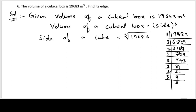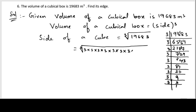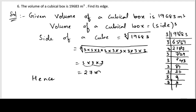We got nine threes in total. Grouping them in sets of three: 3 times 3 times 3 equals 27, three times over. So the cube root of 19683 is 27. Hence the edge — which is nothing but the side — of the cube is 27 meters.